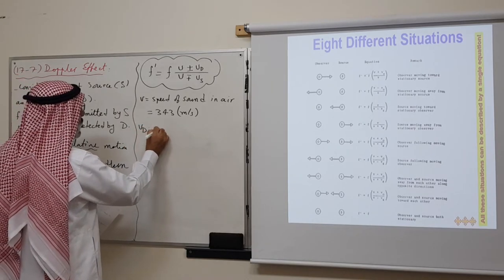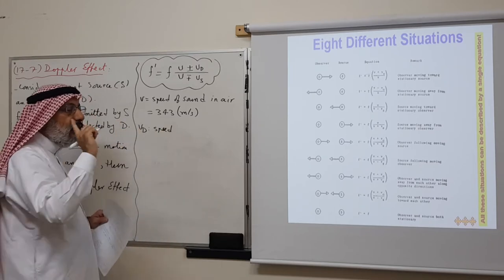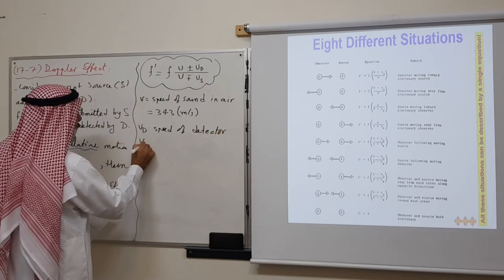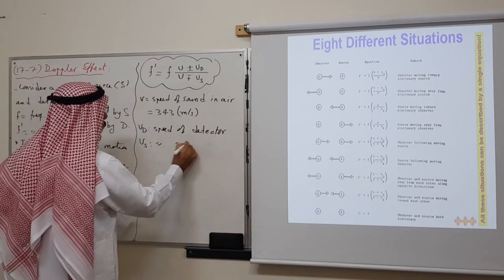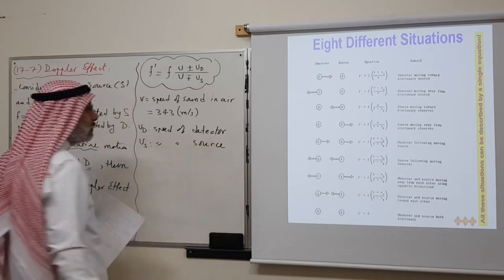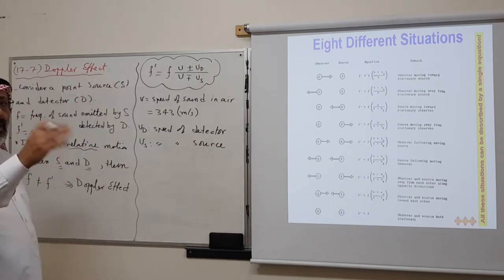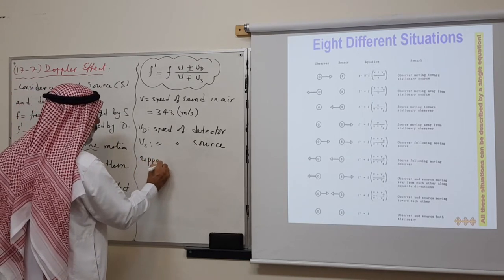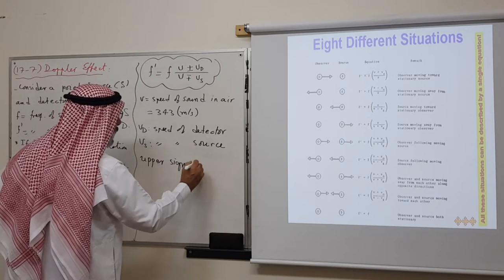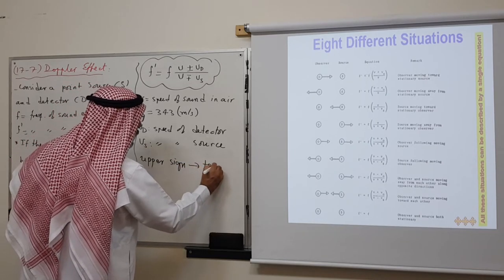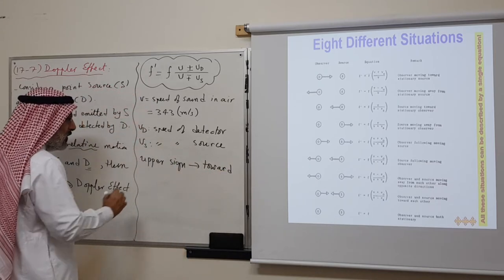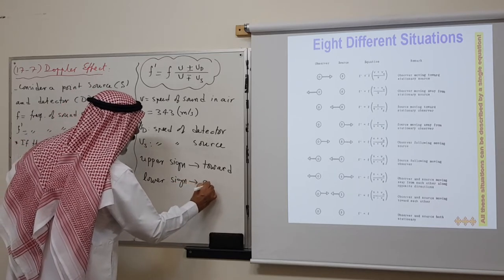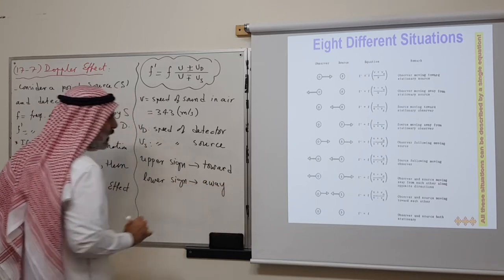In this equation, V_D is the speed of the detector and V_S is the speed of the source. V is the speed of sound in air, which is constant at approximately 343 meters per second. The upper sign is chosen when the object is moving toward the other object, and the lower sign is chosen when it is moving away.